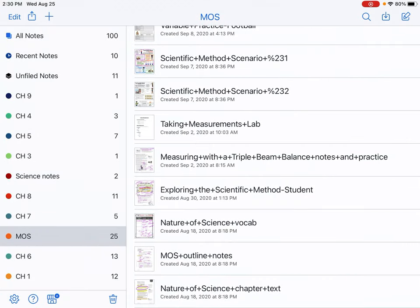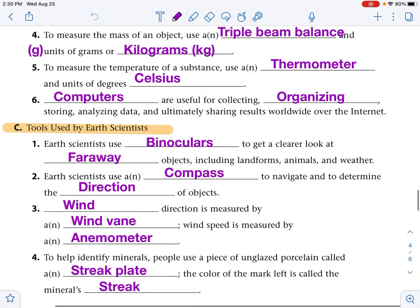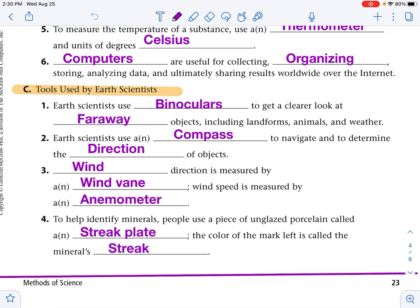Alrighty. So let's go and fill out that last little section in our notebook. So Earth scientists use binoculars to get a closer look at faraway objects such as landforms, animals, weather. Earth scientists use a compass to navigate and to determine the direction of objects. Wind direction is measured by a wind vane. So the direction of it, but the wind speed with a calculation would be an anemometer.